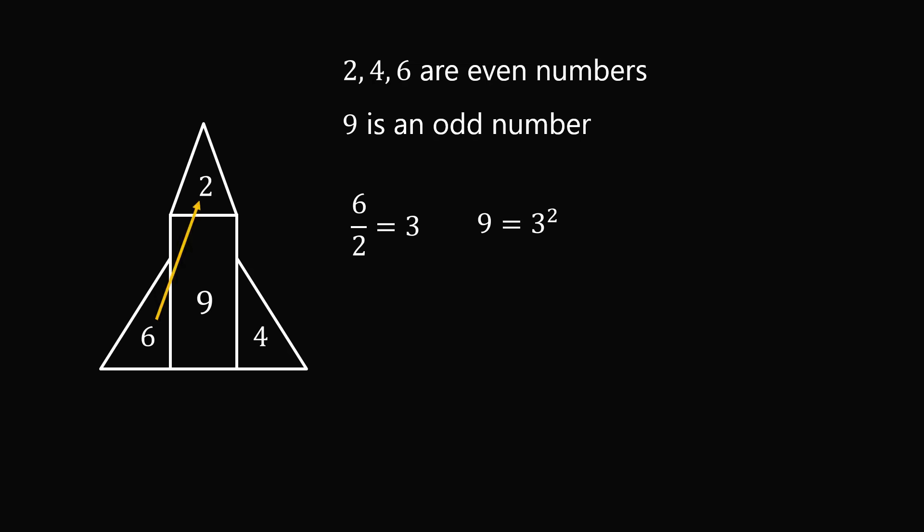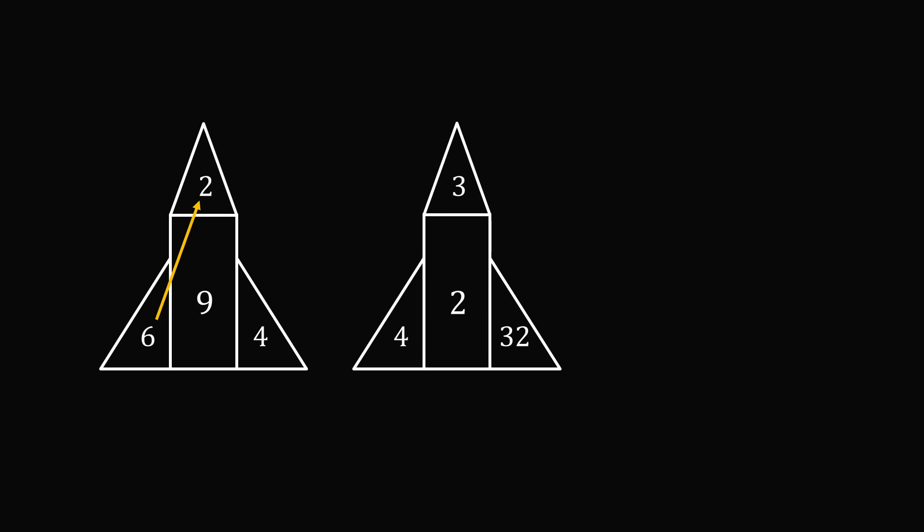So one thing we could try to do is we could take the number in the bottom left fin, and divide it by the number in the nose. But then if we look at the next rocket ship and we try to apply this strategy, 4 divided by 3 is not going to be a whole number. So there could be some pattern in this way, but maybe it's a little bit more complicated than you would expect from 10 year olds. So let's start over at the beginning.